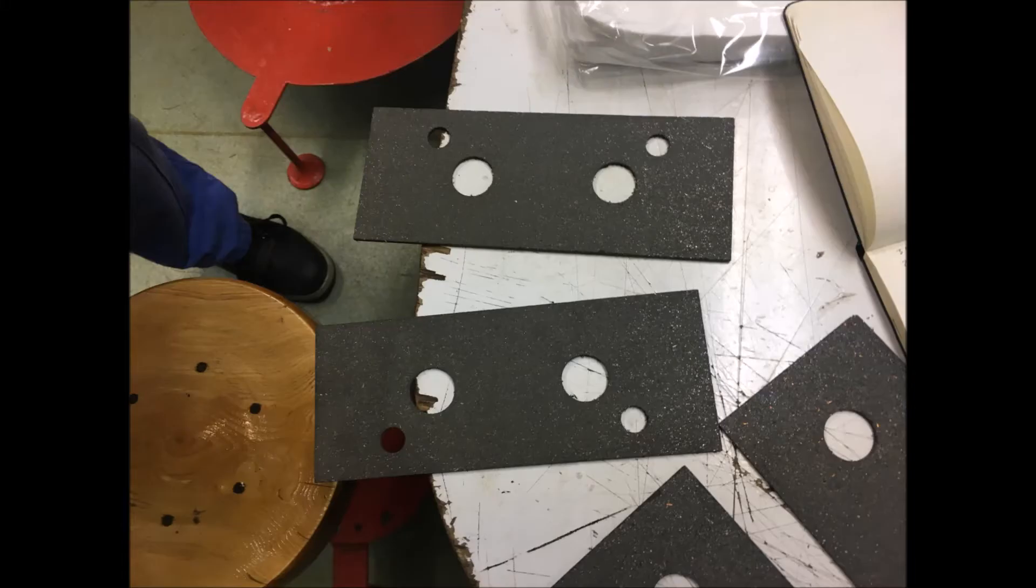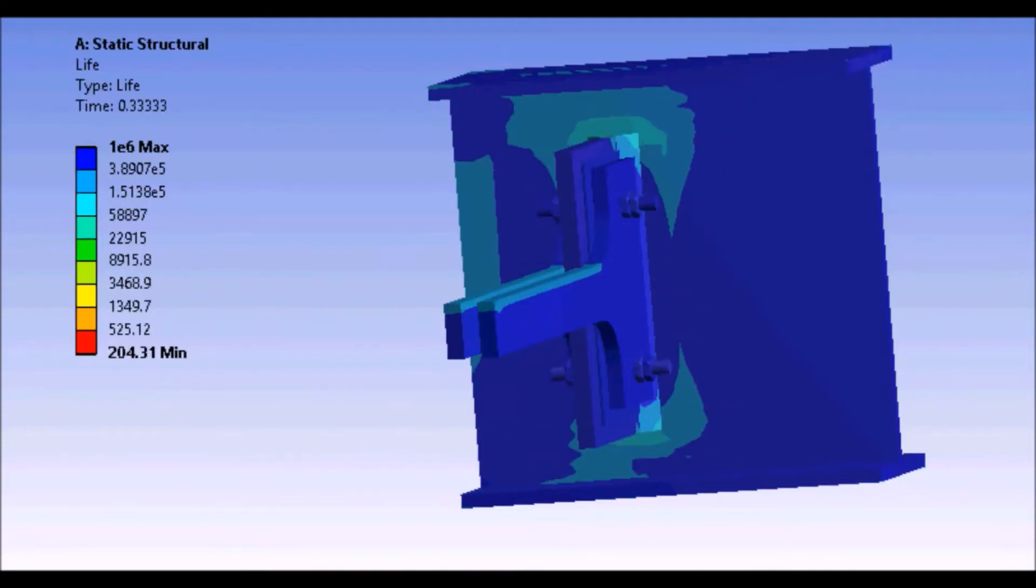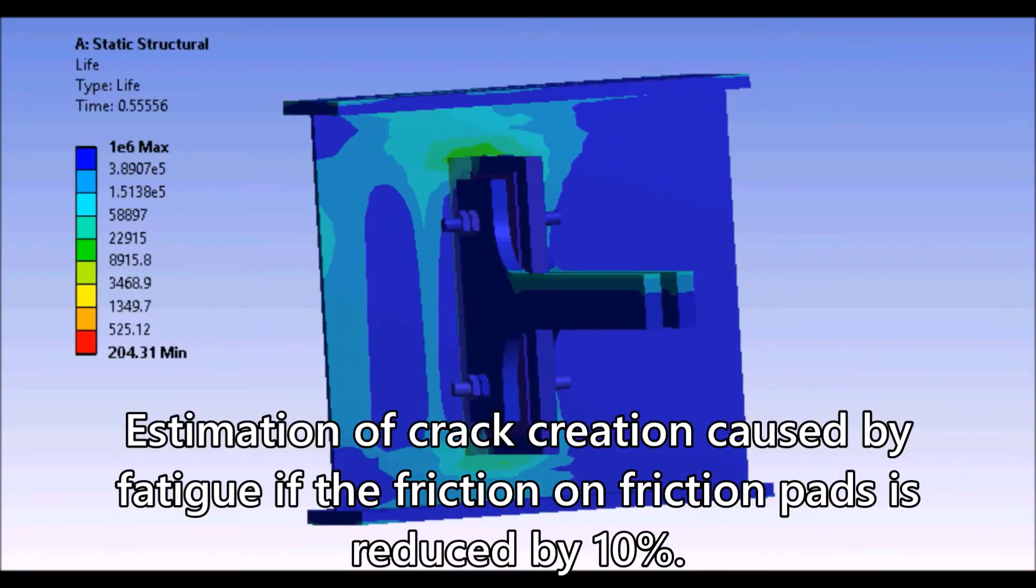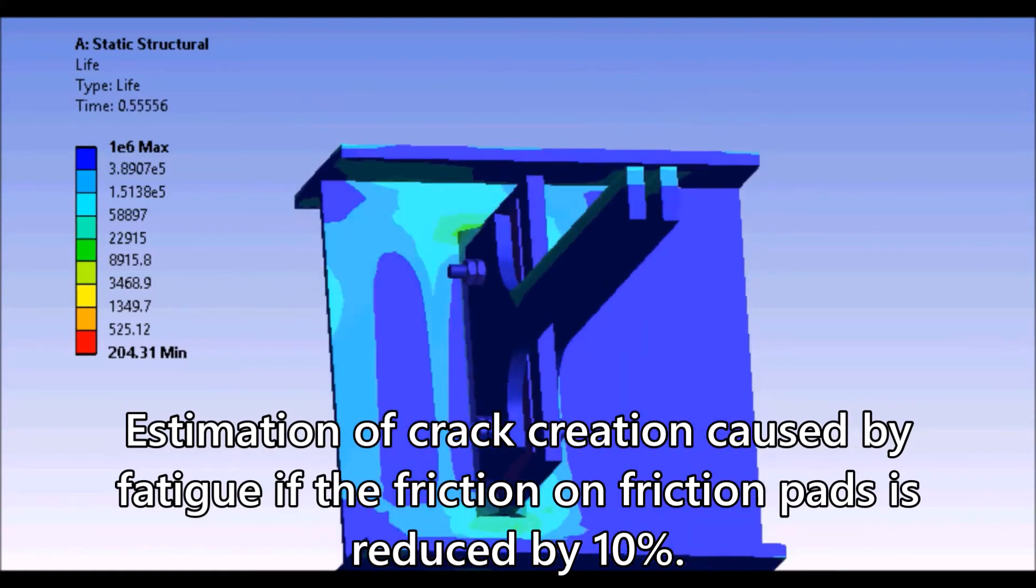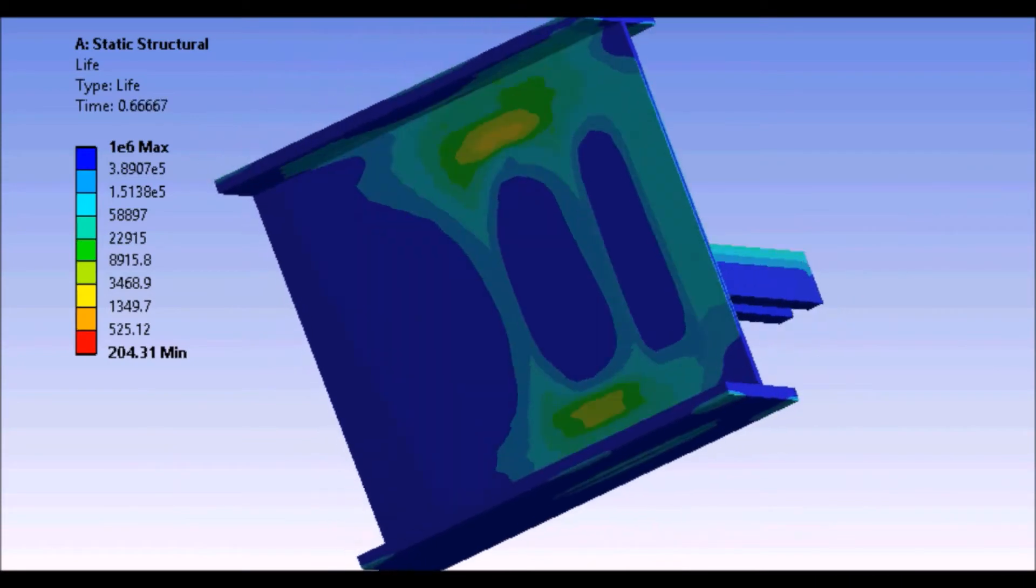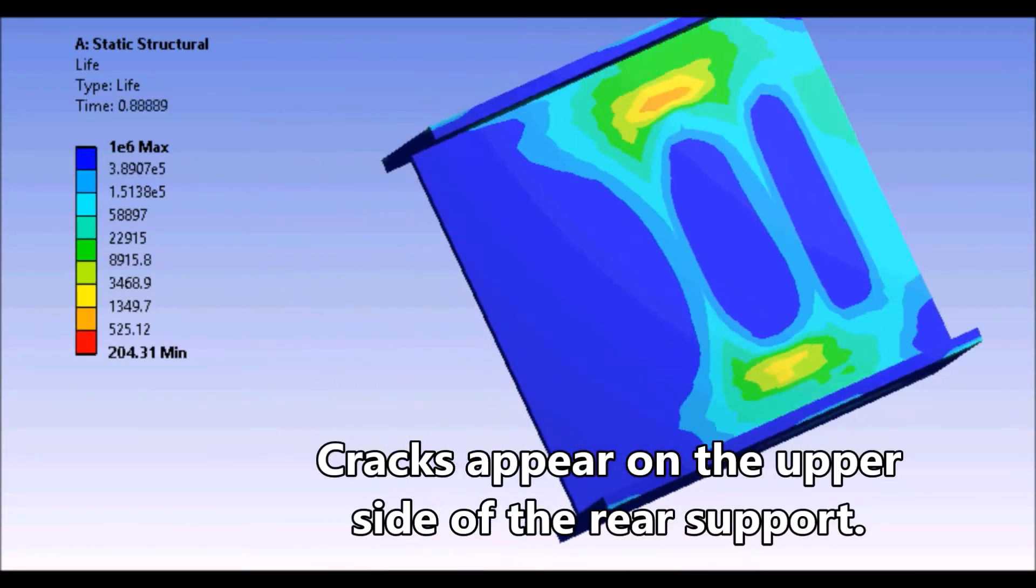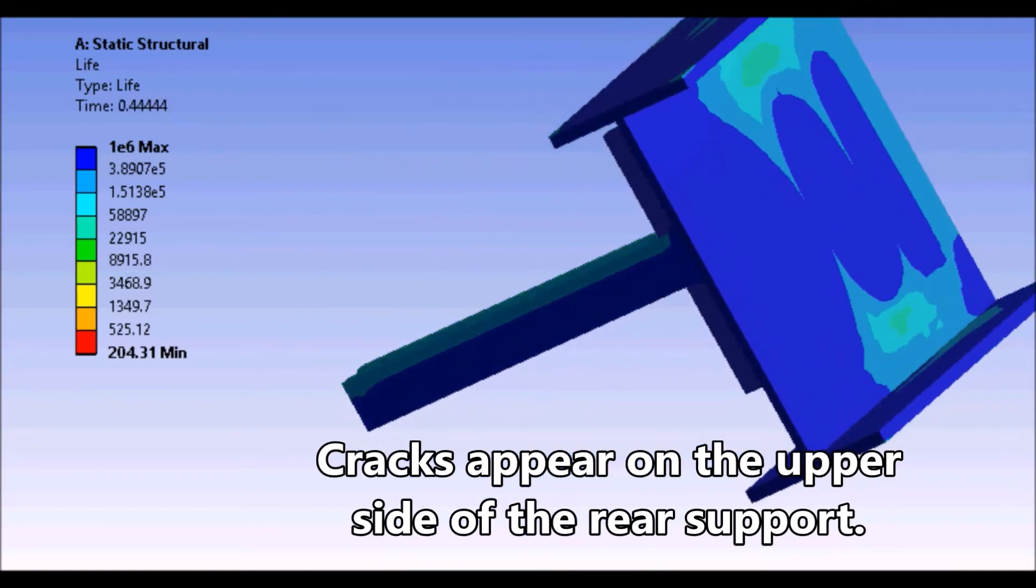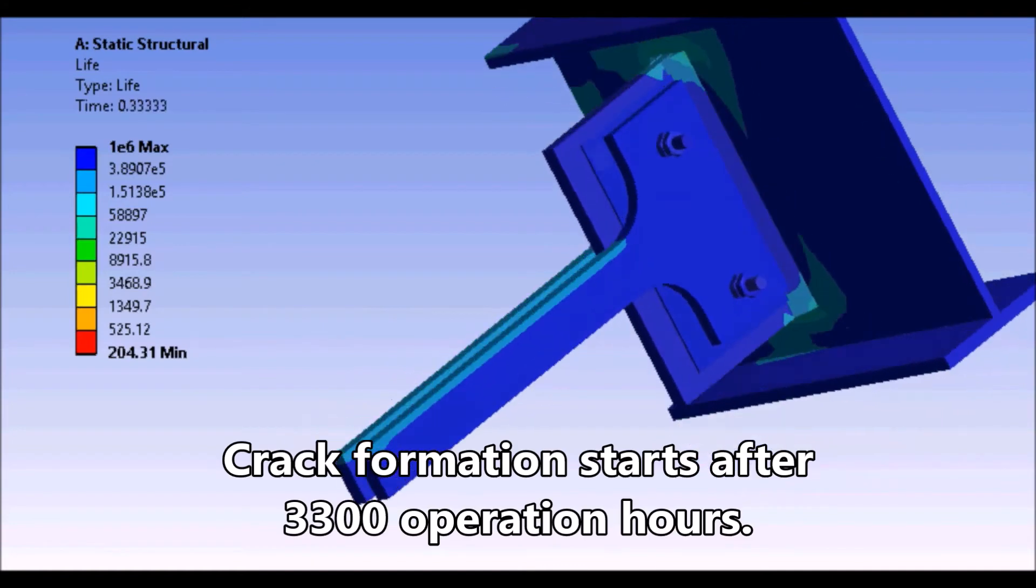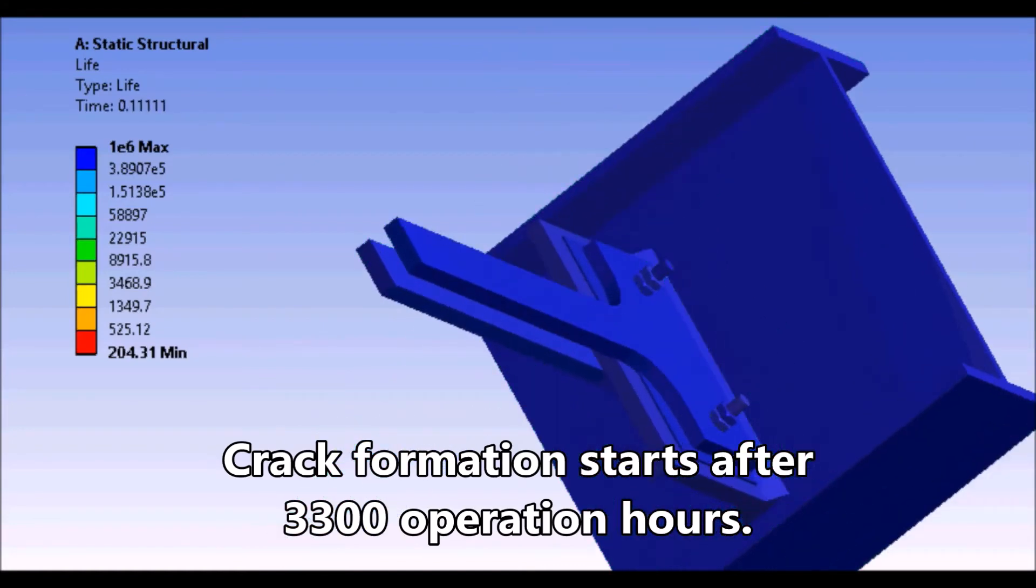Friction pads between hull, engine and bracing joints. Estimation of crack creation caused by fatigue if the friction on friction pads is reduced by 10%. Cracks appear on the upper side of the rear support. Crack formation starts after 3300 operation hours.